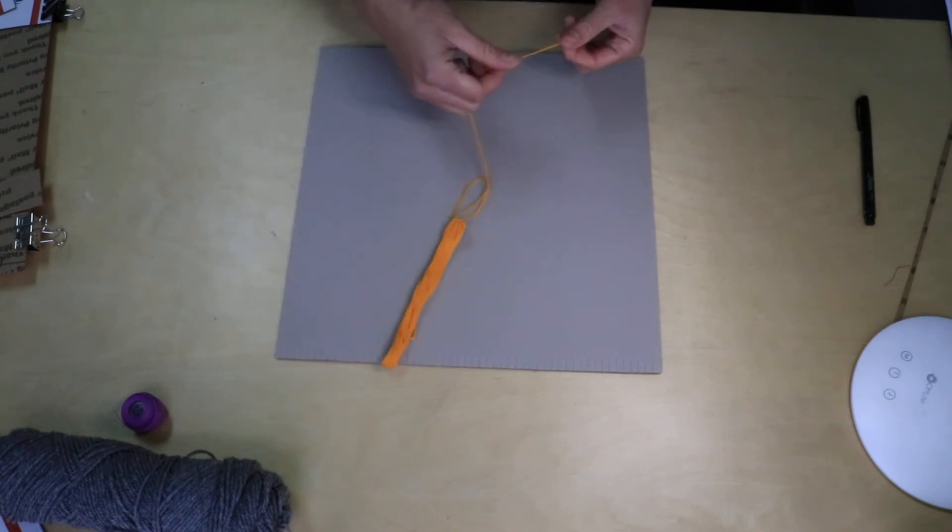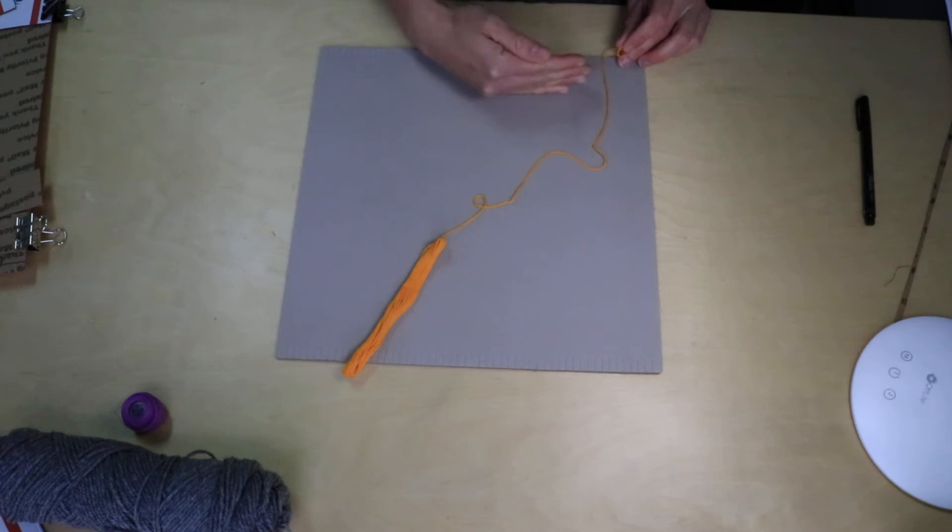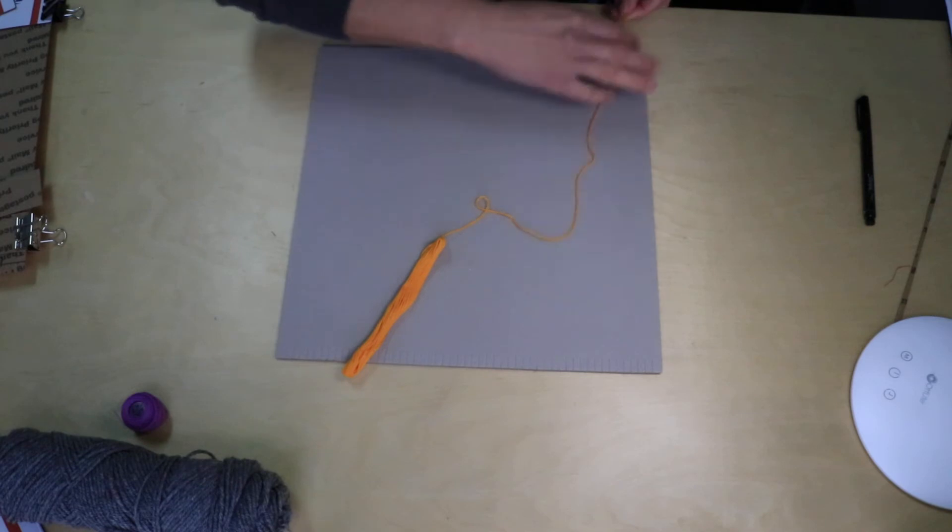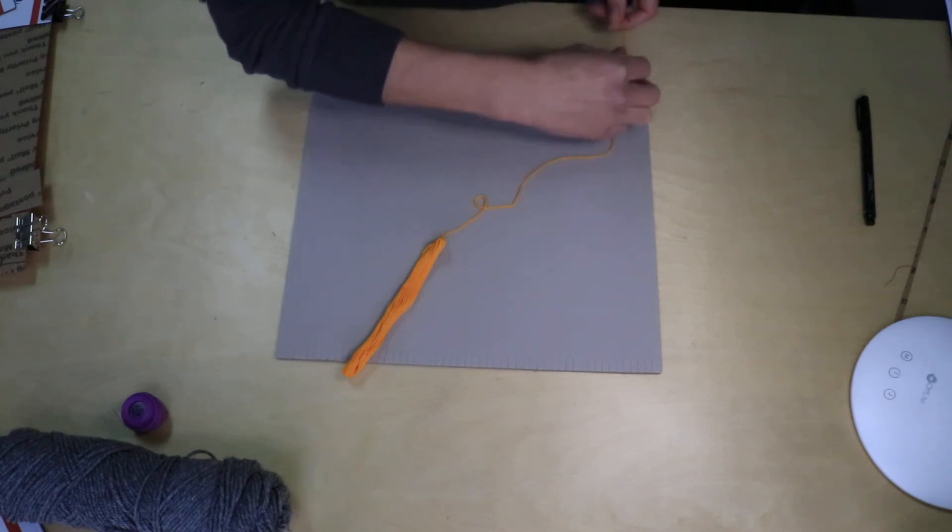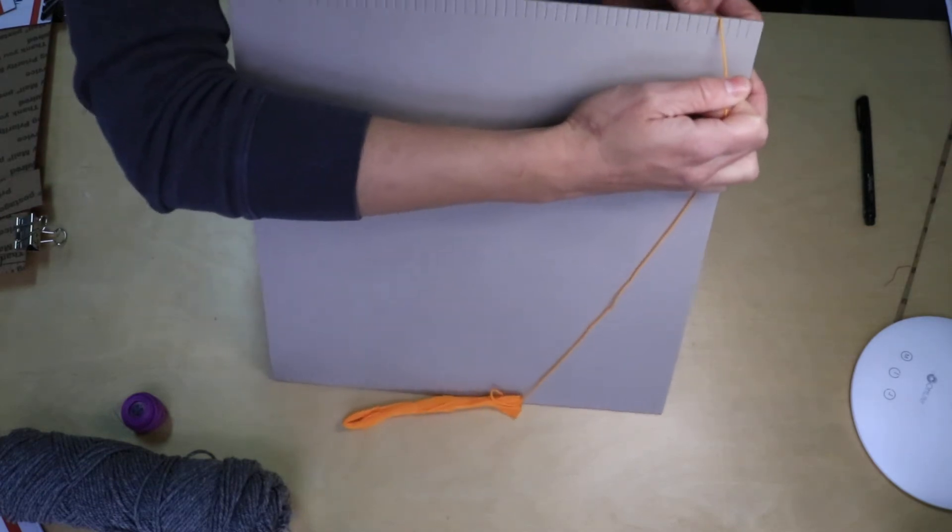So the cool thing about a tab loom is that it's really easy to warp. Because I like to weave from the top of my design up, which also means I'm working from the bottom of my loom towards the top, I'm actually going to take my warp thread and I'm going to start it at the bottom. So I'm going to put this in between one of the tabs, pull this so you can see it, kind of muscle it in.